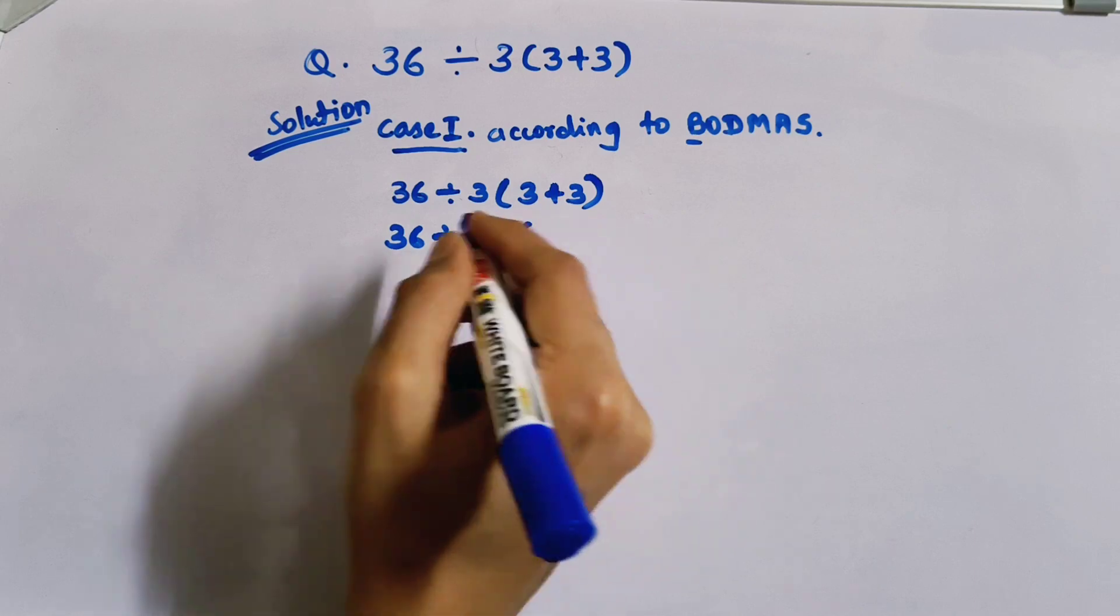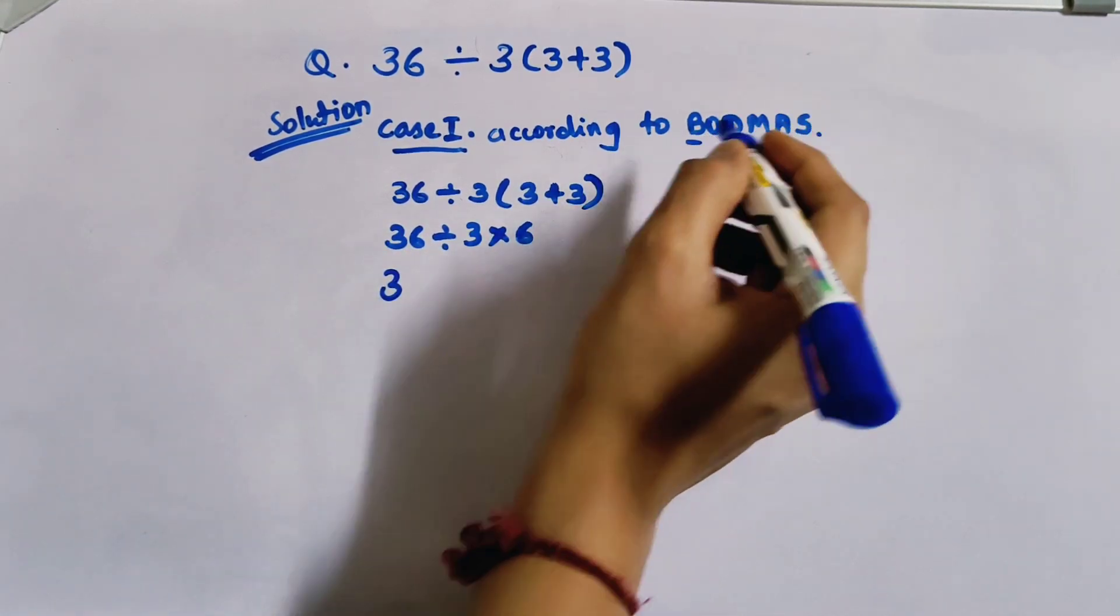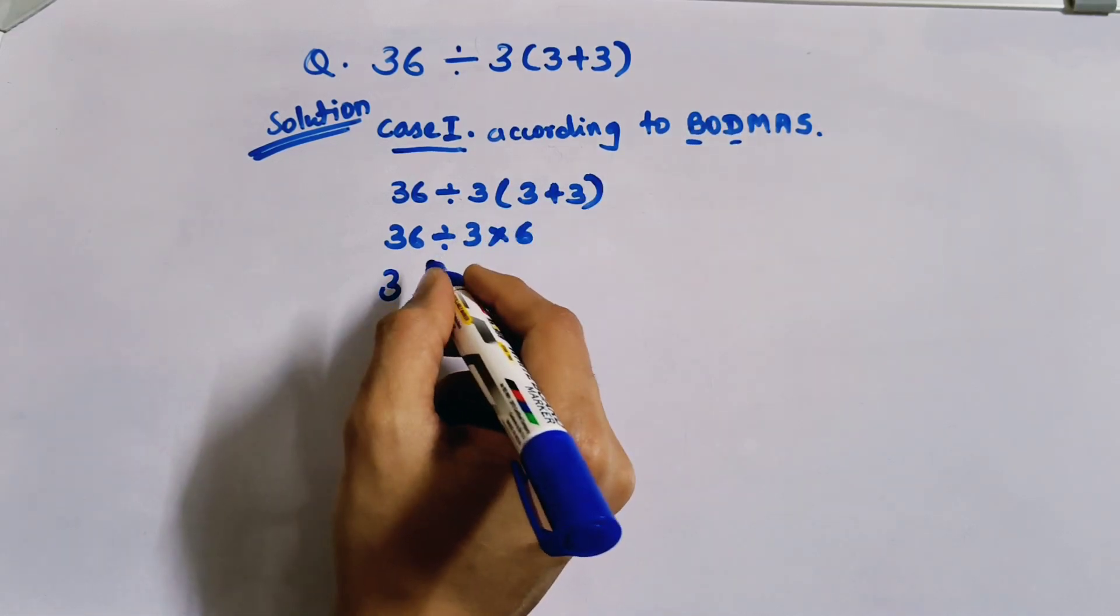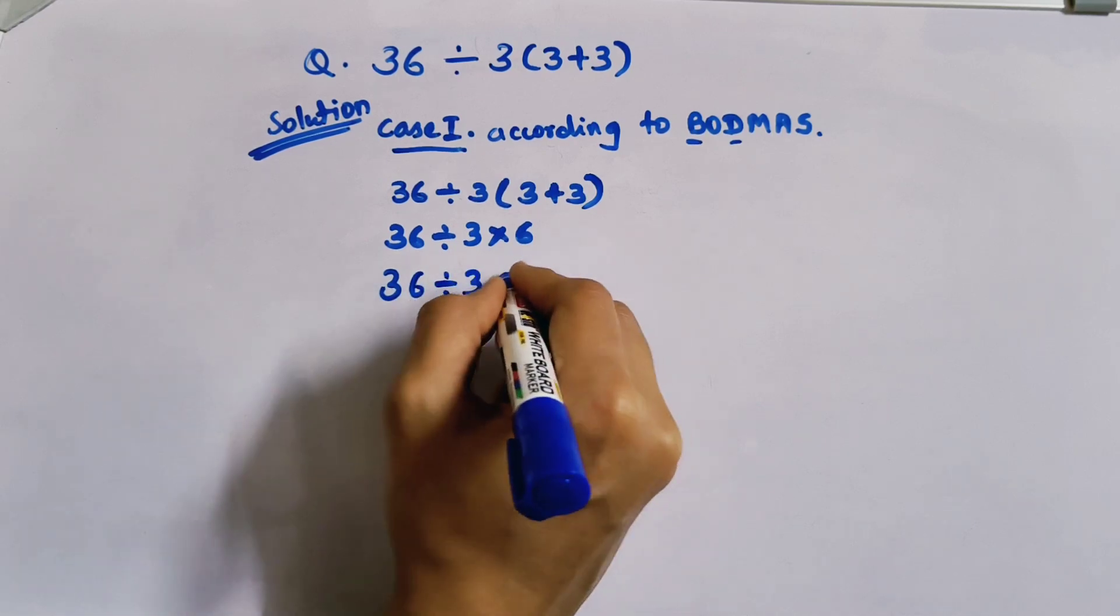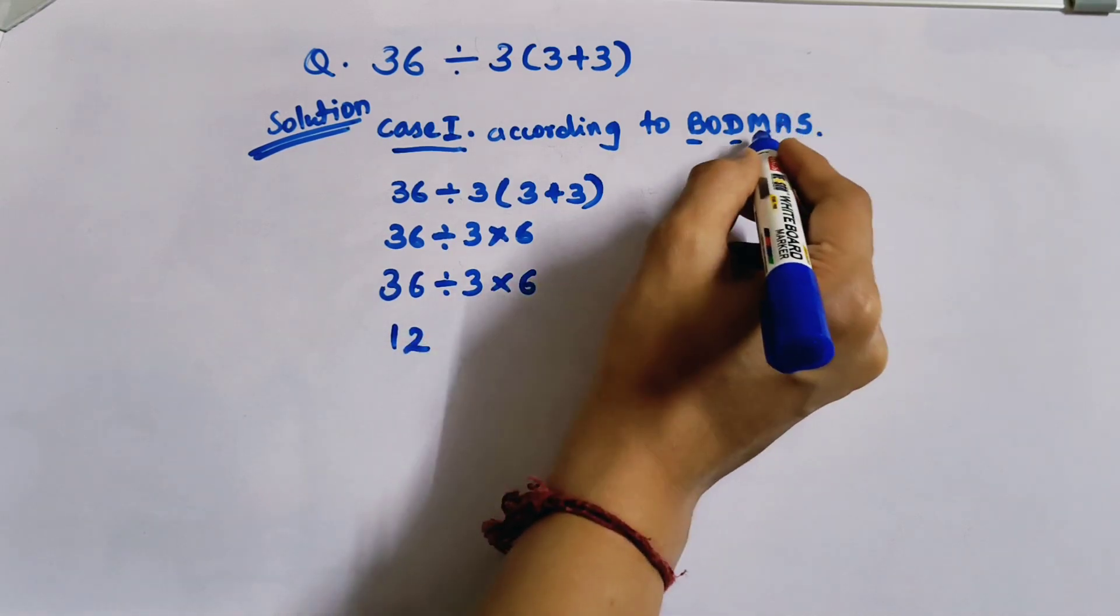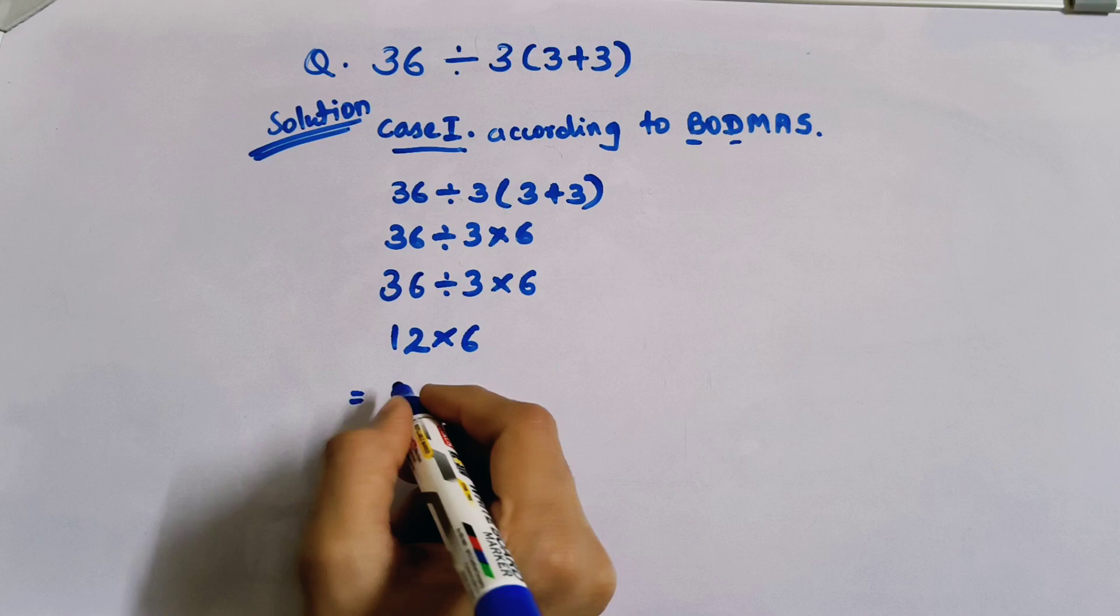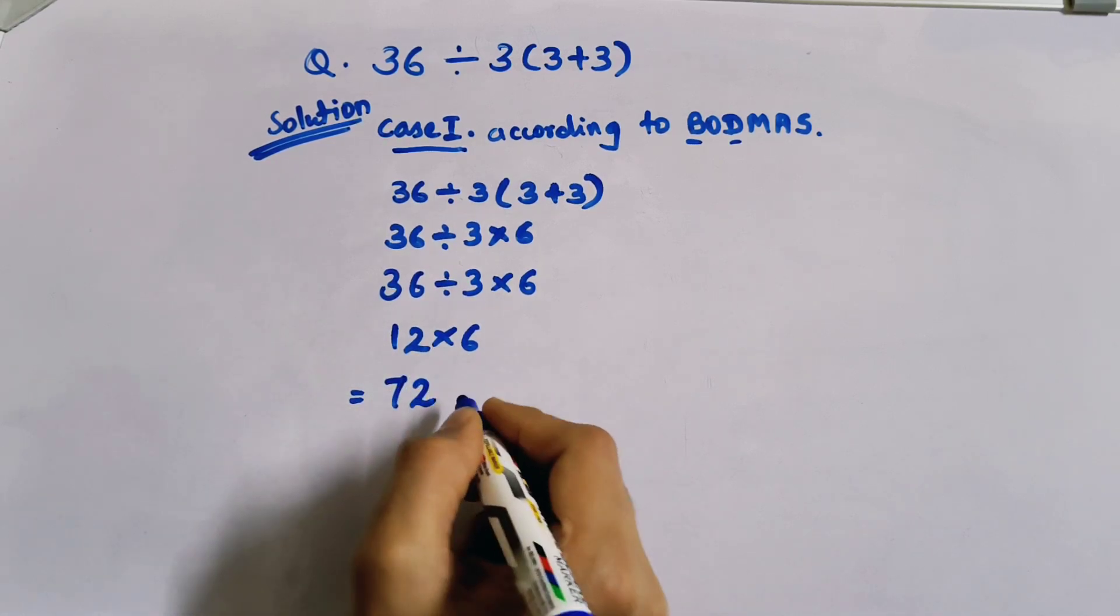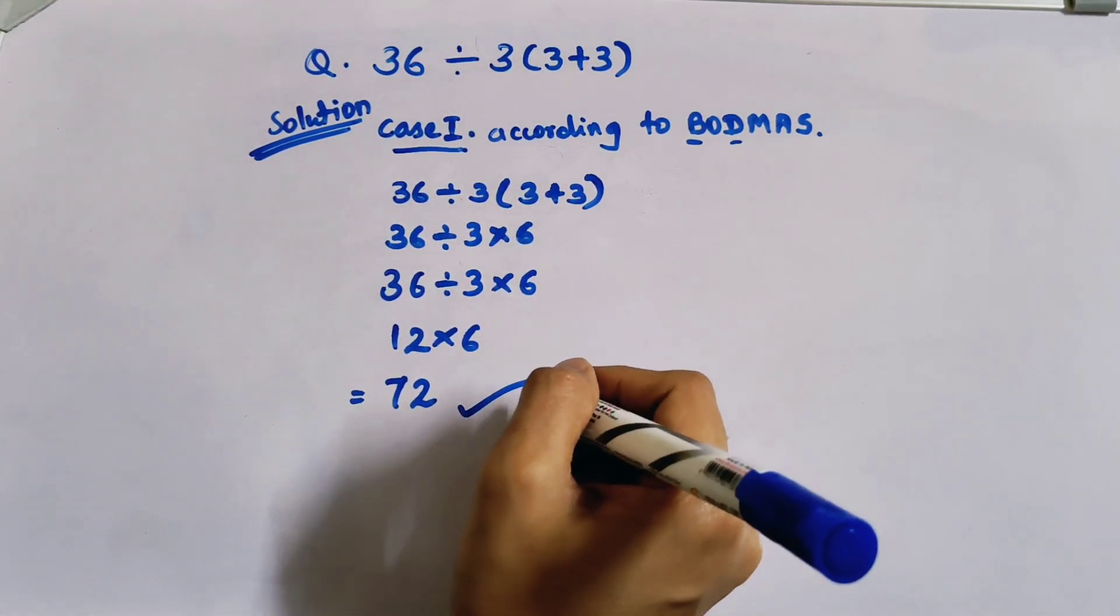Now D stands for division, so we'll do division. Then M stands for multiplication, so it's 72. Is this correct? Is this the correct answer? Is this a correct way of application of BODMAS?